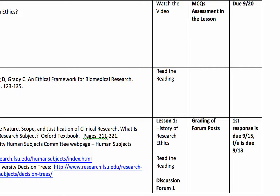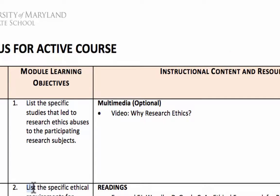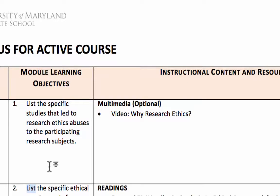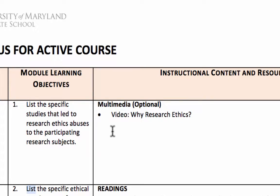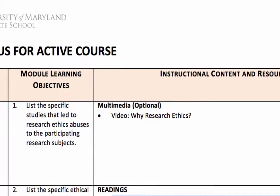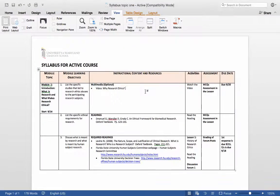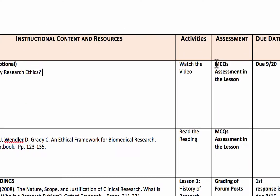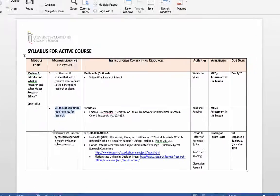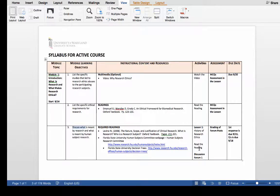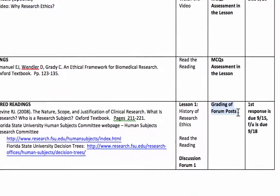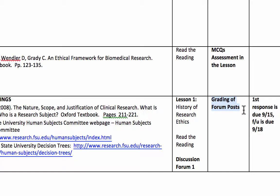As we saw before, these learning objectives — which merely use the verb 'list' — are lower-order learning objectives, which can be achieved by watching a video or doing a reading. To assess whether the learner has achieved these objectives, we have MCQ assessments in the lesson. To determine whether the learner can discuss the topic, we have the discussion forum, and we will grade those forum posts.